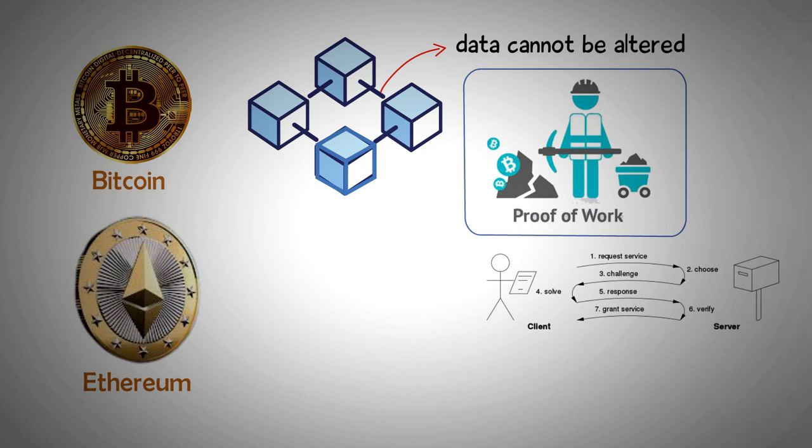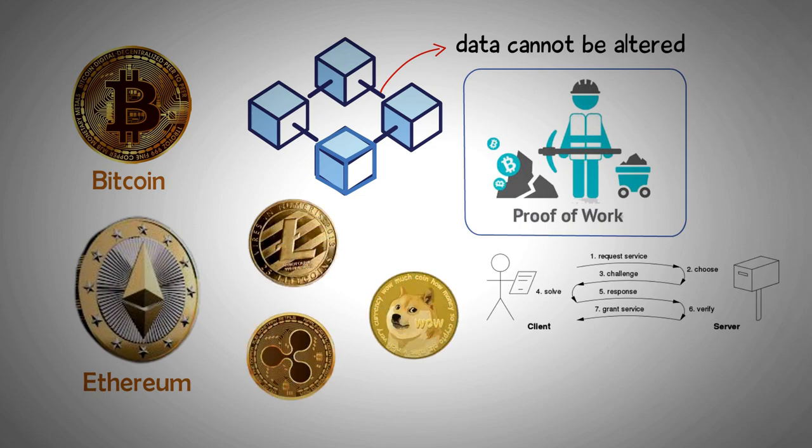There are thousands of other coins apart from Bitcoin and Ethereum, with the most famous examples being Litecoin, Ripple, and Dogecoin. Collectively, all coins apart from Bitcoin are known as altcoins.